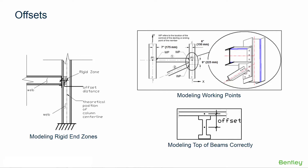The length of a member offset, and therefore the size of the rigid end zone, can be based on engineering judgment. Member offsets may be modeled in any direction relative to either the local or global coordinate system.